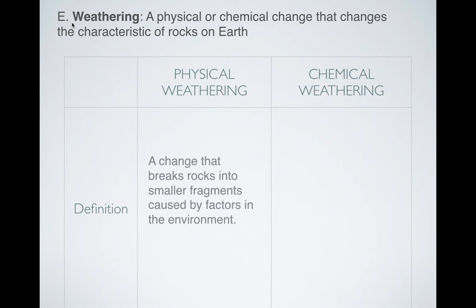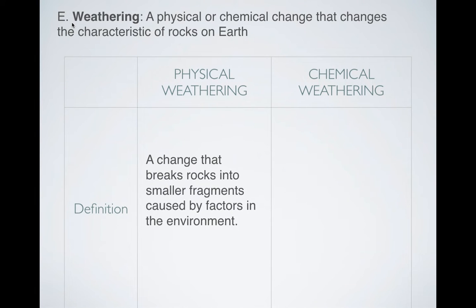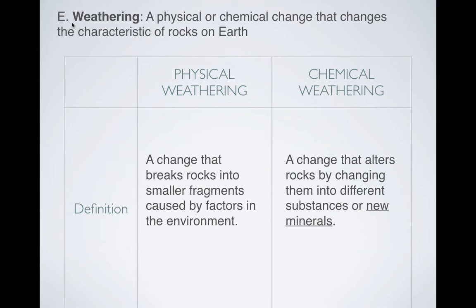What exactly is physical weathering? Physical weathering is sometimes also called mechanical weathering — they're the same thing. It's any change that breaks rocks into smaller fragments caused by factors in your environment. For example, if you take a rock and swing a hammer at it and break it into pieces, you would be taking part in physical or mechanical weathering. Chemical weathering is when you alter a rock and turn it into a new mineral, a new substance, a new rock — something different from the starting material.